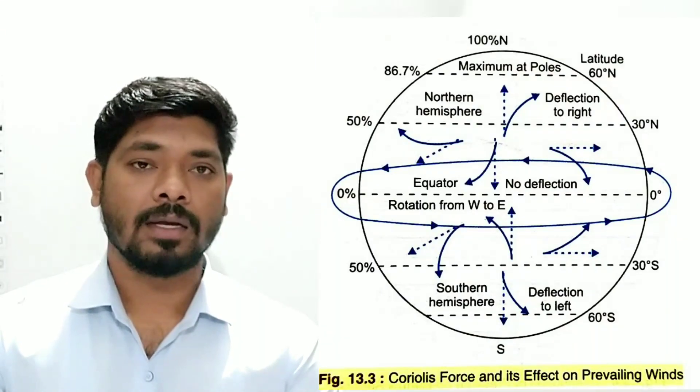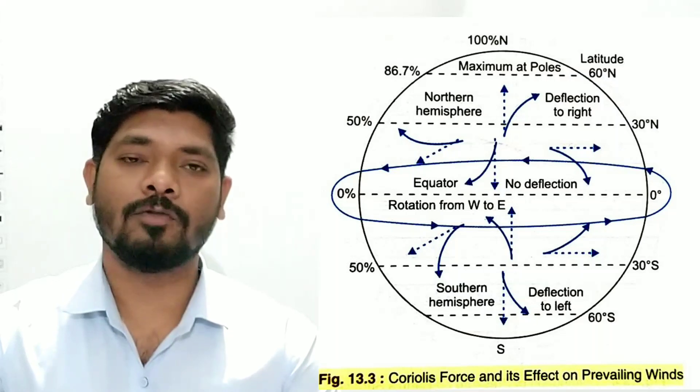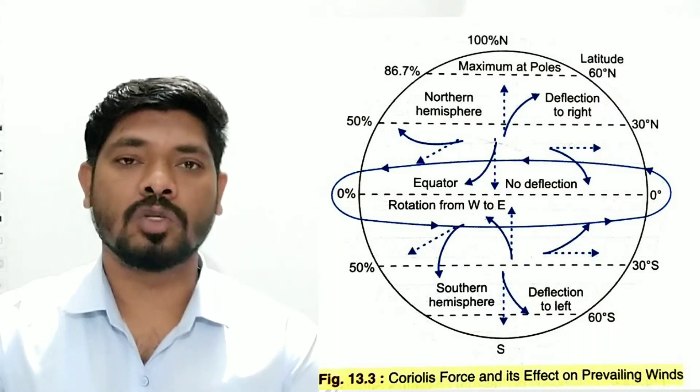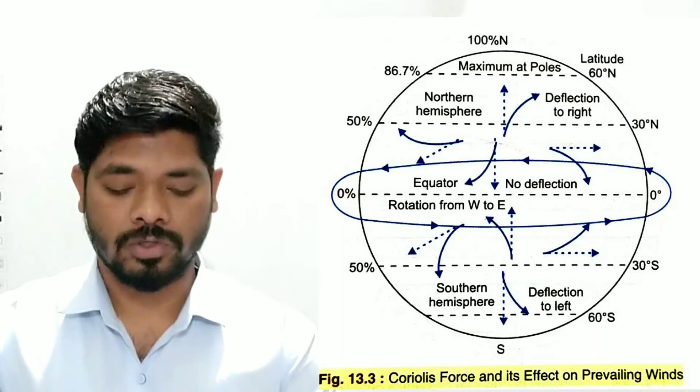As air moves away from the poles, air moves in at the higher level to take its place. There is another term — the Coriolis Force. Any object or fluid moving in the northern hemisphere will deflect or turn towards the right side, and in the southern hemisphere any object or fluid will deflect or turn towards the left direction. This is because of the Coriolis Force. In the polar areas the Coriolis Force is more, but it is absent at the equator and increases as we go towards the poles.